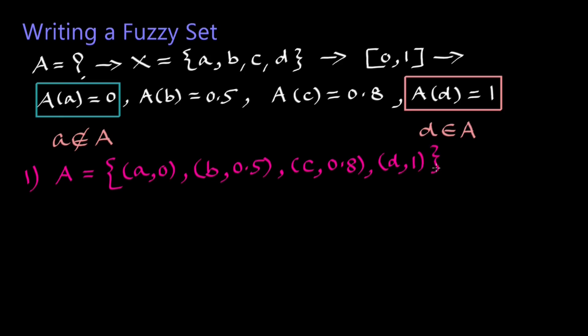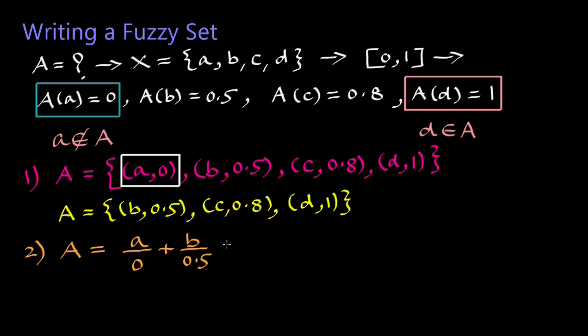By convention, member with grade value 0 is not written in fuzzy set. So we rewrite A as {(B, 0.5), (C, 0.8), (D, 1)}. By second method we write A as A/member + 0.5/B + 0.8/C + 1/D.